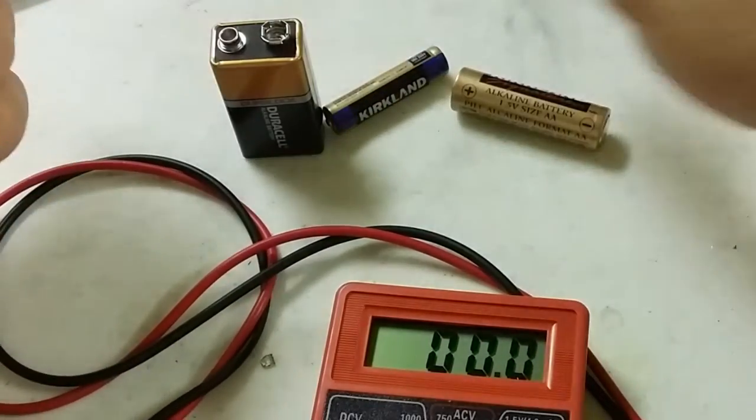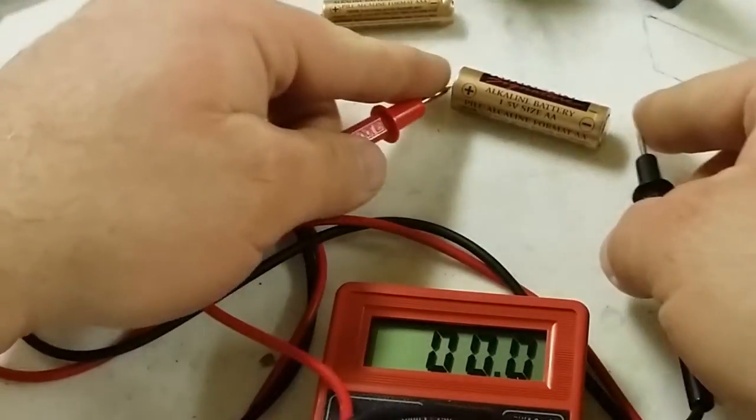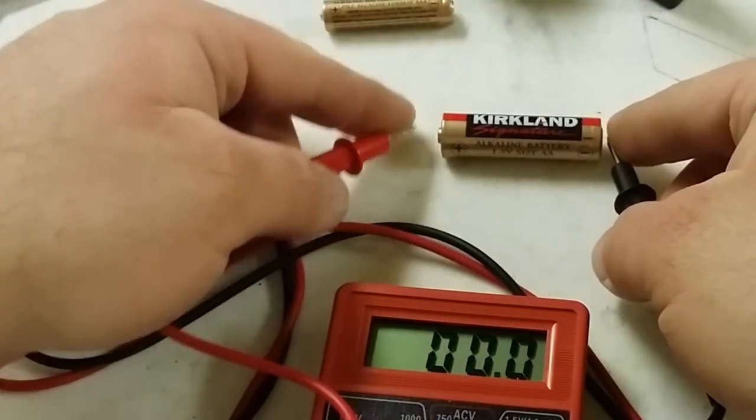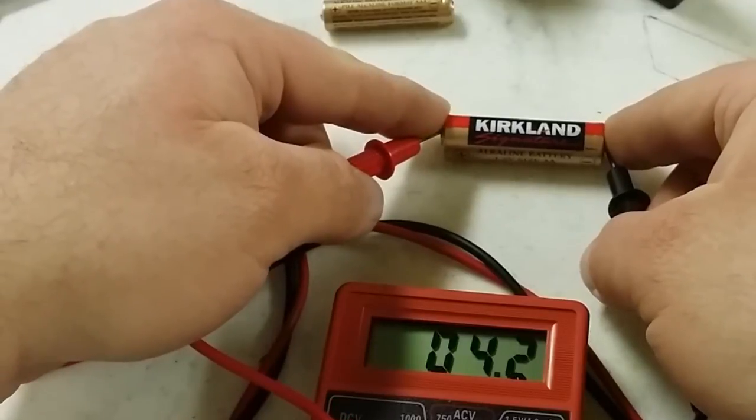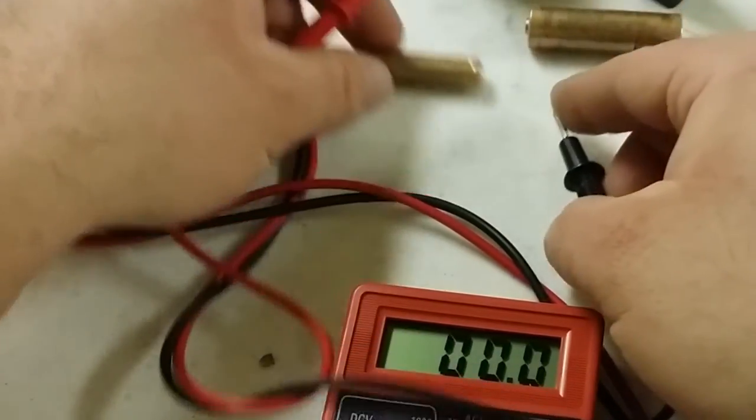And then you just repeat the same steps for the double A and triple A battery. So again, it should read 4 milliamps for a double A as well as a triple A.